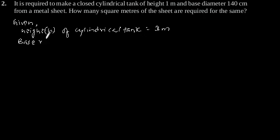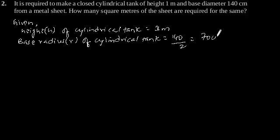Given: height h of cylindrical tank is 1 meter. Base radius r of cylindrical tank is equal to 140 divided by 2, which is equal to 70 cm, which is equal to 0.7 meter.